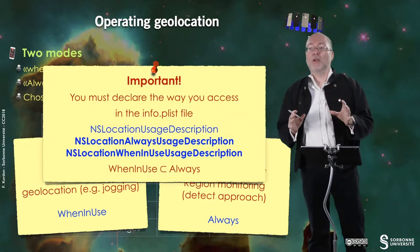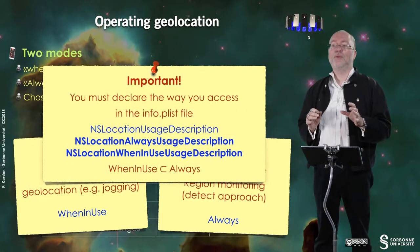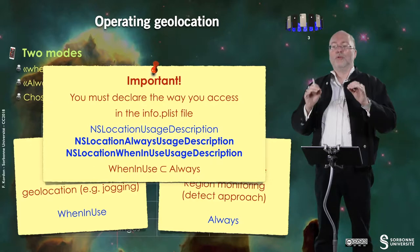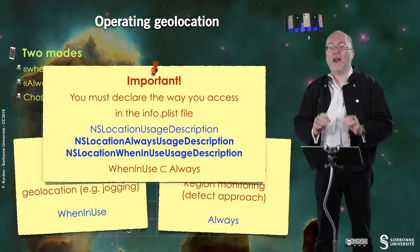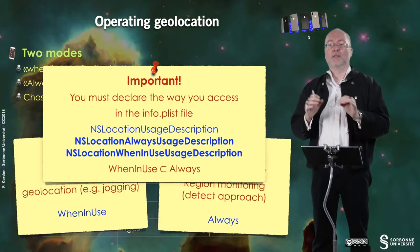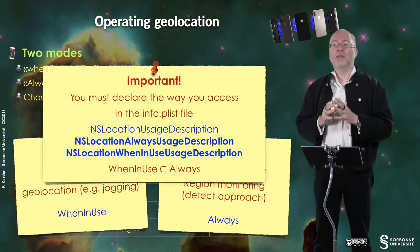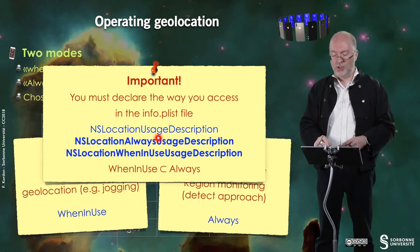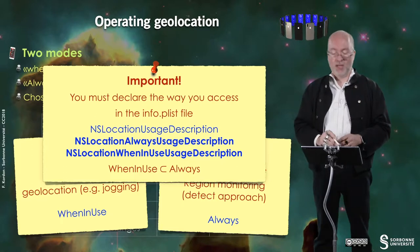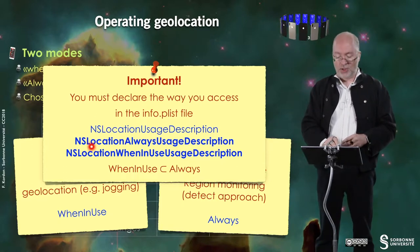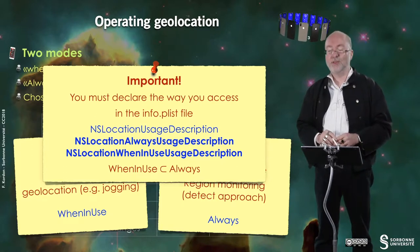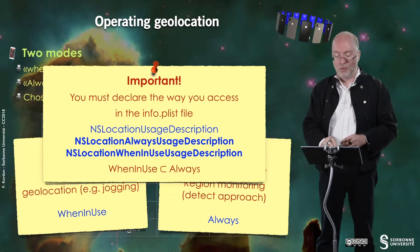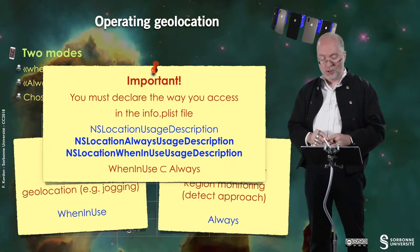It's important that you declare the way you access geolocation in the info.plist file. You have NSLocationUsageDescription, NSLocationAlwaysUsageDescription, and NSLocationWhenInUseUsageDescription — knowing that 'always' includes 'when in use'.